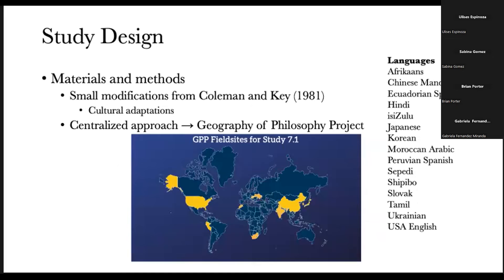So we did just small modifications from the original study of Coleman and Key, basically cultural adaptations: change names, food preferred for the food that some characters were eating in the vignettes, etc. And we adopted this general approach of the Chair of Philosophy, so we work together as a team with these translations, back translations, and trying to ensure that the adaptations were correct and they were not against the spirit of the study.